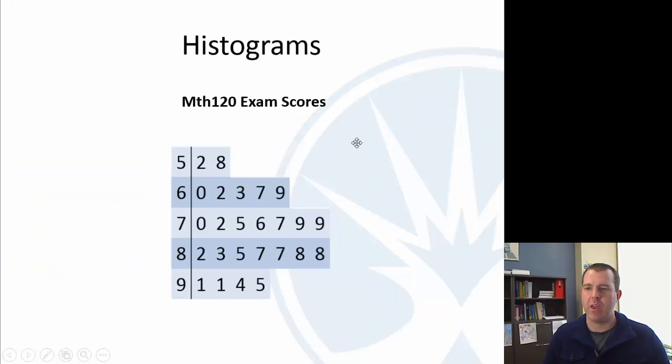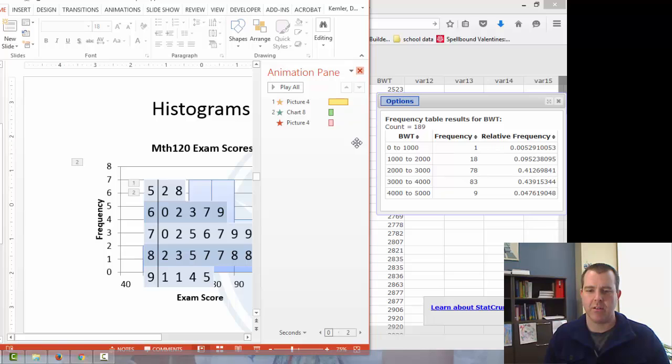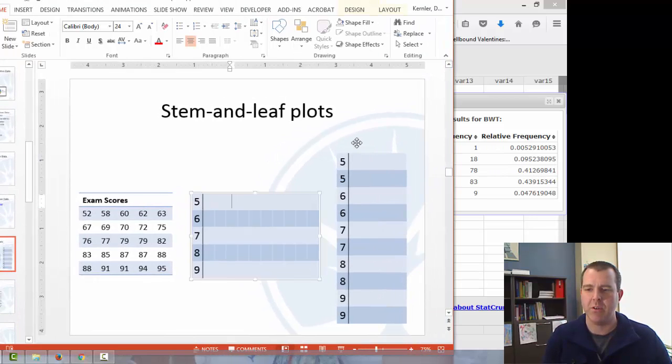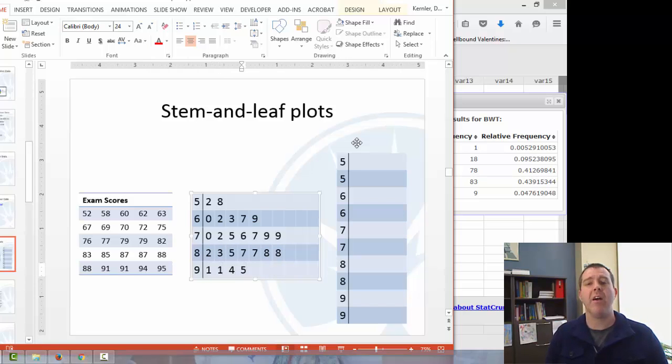And we're going to write them in order, and we're going to see if we can get an idea of how the data are distributed from this. So we have a 2 and an 8, then 0, 2, 3, 7, 9, 0, 2, 5, 6, 7, 9, then 9, 2, 3, 5, 7, 7, 8, 8. And 1, 1, 4, 5. And so this now is a stem-and-leaf plot. The stems are off to the left, the leaves are off to the right. So when I see this 5 over here, it represents 75. And you can see it's kind of like the table, but now it's kind of giving you some visual representation of it as well.